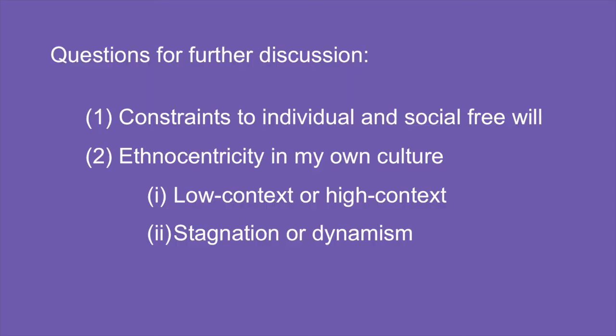Finally, here are some questions for further discussion. Firstly, it would be interesting to determine whether there are any constraints to individual and social free will in one's own culture. Secondly, to see if there are ethnocentric practices related to the low-context or high-context characteristics of that culture, and whether stagnation or dynamism is the main feature. We hope that these materials have been useful and invite any viewer to leave a comment in the comments section. Thank you and goodbye.